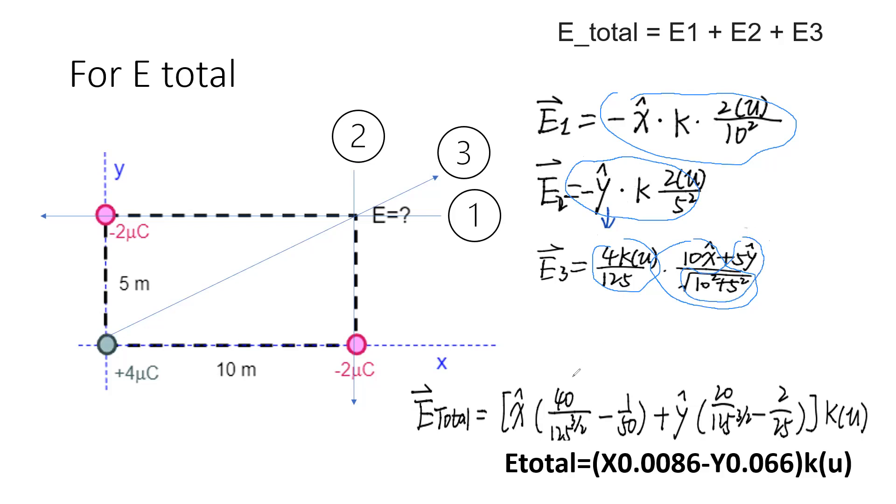We can get the final answer E total. E total equals x hat times (40 over 125 minus 1 over 50) plus y hat times (20 over 25 minus 2 over 25). In the end, we need to multiply by KU. So we get E total equals x hat times 0.0086 minus y hat times 0.066 times KU.